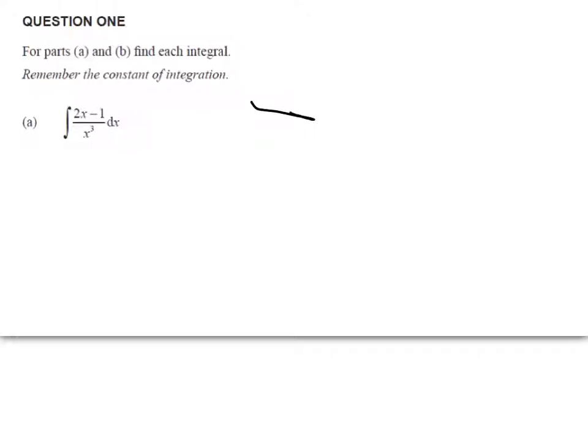Alright, so this is the first part. We need to anti-differentiate this expression here, which equals 2x to the negative 2 minus x to the negative 3. Okay, because I've only got one number, x cubed, in the bottom line, in the denominator.